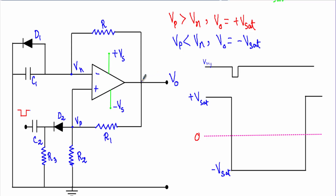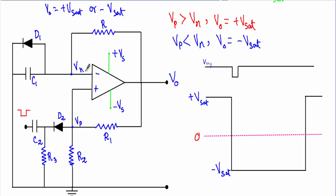In this circuit the output terminal is connected with the inverting terminal through feedback resistor R, and the output terminal is also connected with the non-inverting terminal through feedback resistor R1. With this configuration the operational amplifier is forced to operate in the saturation region, so output voltage VO will be either plus Vsat or minus Vsat. The portion of output voltage stored in capacitor C1 is VN, and the portion dropped across R2 from the non-inverting terminal to ground is VP.